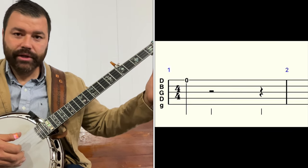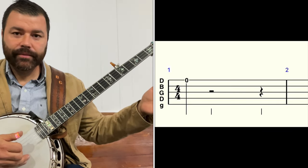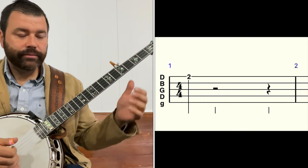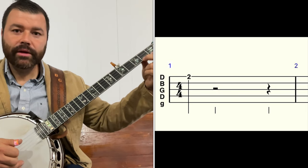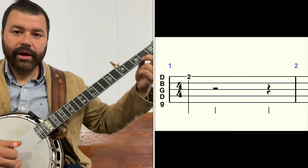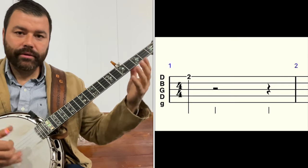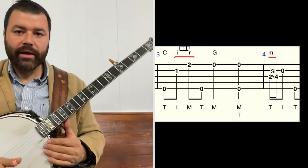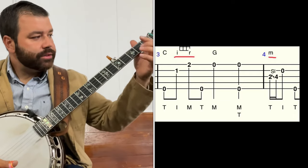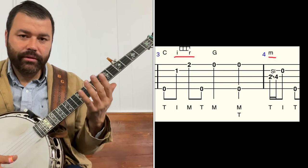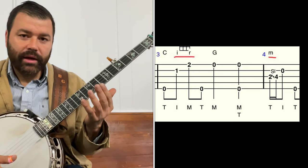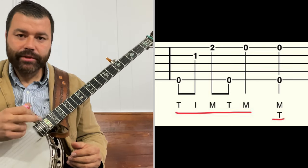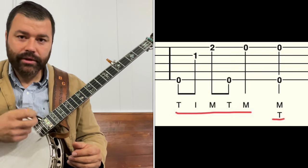If you see a zero, say for example on the first string, that means open first string. If we have a two on the first string, that would be the second fret on the first string. So the lines are the strings, the numbers are the frets. Above the tab, we have some letters that indicate which finger to use of the left hand. Below the tab, we also have some letters — T-I-M — and that represents what fingers to use of the right hand.